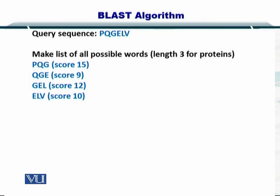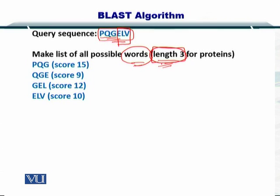The first step in the BLAST algorithm is to make a list of all possible words. If this is your sequence, you can have PQG — a word of length 3 — or QGE, or GEL, or ELV. So you can make words of length 3. I have listed down PQG, QGE, GEL, and ELV — those are the four words that could be formed by looking at this sequence.